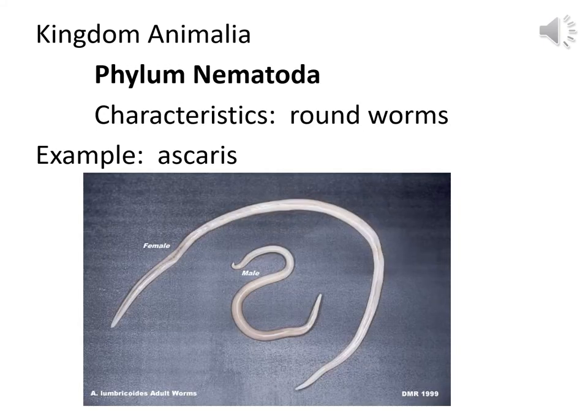Ascaris worms are in Phylum Nematoda. The characteristics of nematodes are round worms — while tapeworms and liver flukes look flattened, these guys are actually round. The male Ascaris worm has a hook-shaped tail end, while the female Ascaris worm has a straight end. So now you can sex worms — go home and impress your friends.